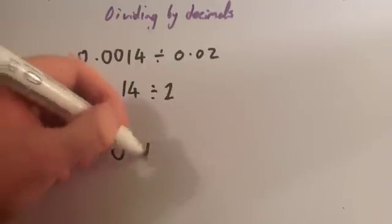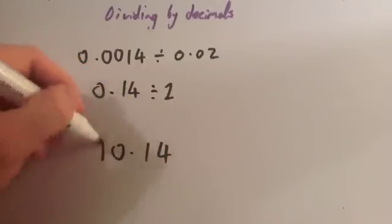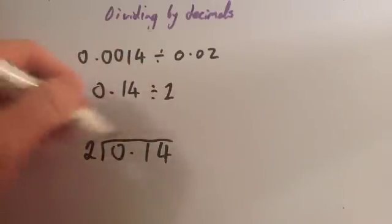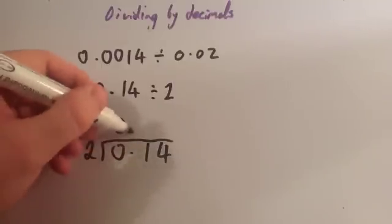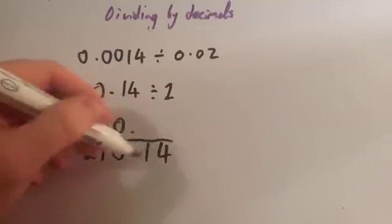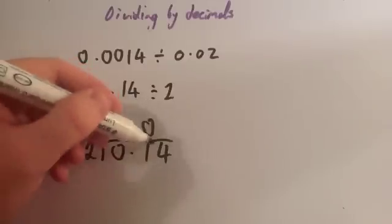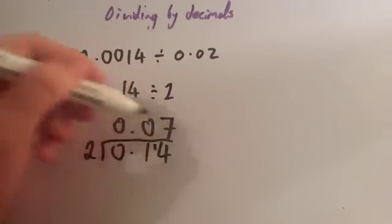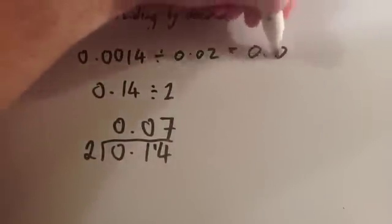I'm going to use the Bus Shelter method — short division. So 0.14 is the number you're dividing, under the line of the Bus Shelter, divided by 2. How many 2s go into 0? 0. Put the decimal point directly above where the decimal point is in the number we're dividing. 2s into 1 don't go — remainder 1. And 2 into 14 goes 7 times. So our answer is 0.07.